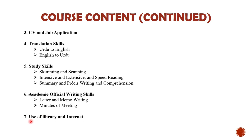Number seven is use of library and internet. This topic is not going to be very detailed — I will generally discuss it because you already know how important it is to use the library and internet for the sake of your studies and academics. This is a general topic for discussion only.